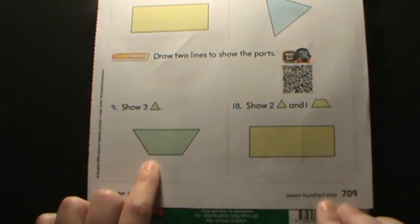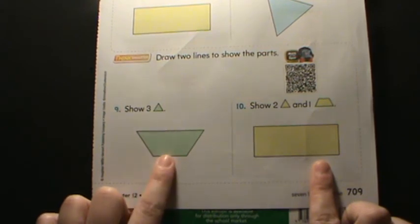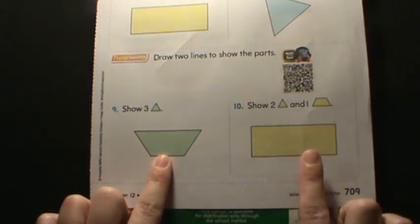Then on nine and ten, you're doing the same thing. Except here you're going to show three triangles. Here you're going to show two triangles and a trapezoid.